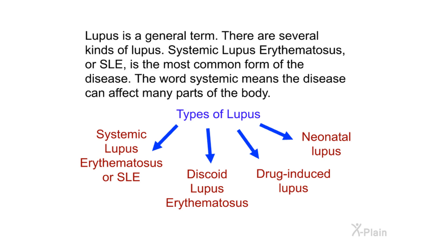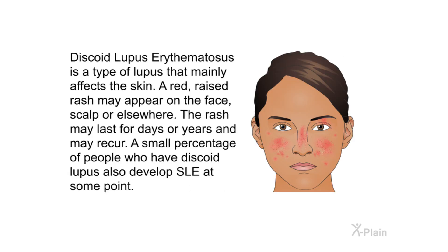Lupus is a general term — there are several kinds. Systemic lupus erythematosus, or SLE, is the most common form of the disease. The word systemic means the disease can affect many parts of the body. Discoid lupus erythematosus is a type of lupus that mainly affects the skin. A red, raised rash may appear on the face, scalp, or elsewhere. The rash may last for days or years and may recur. A small percentage of people with discoid lupus also develop SLE at some point.